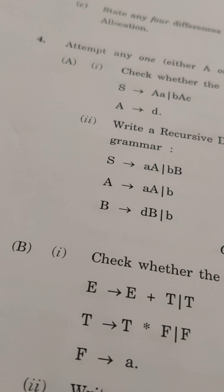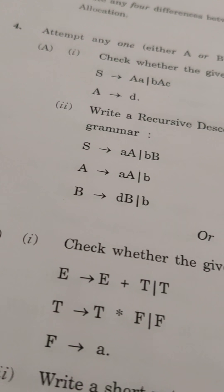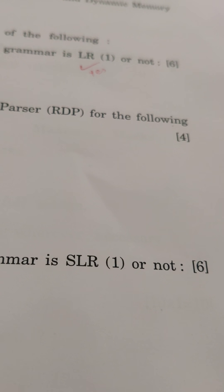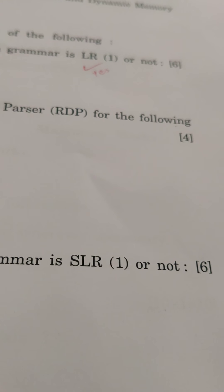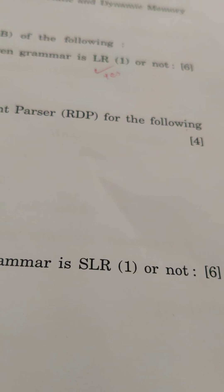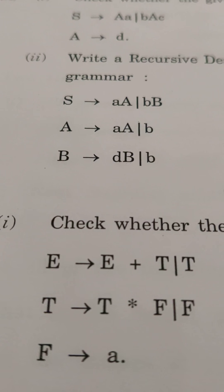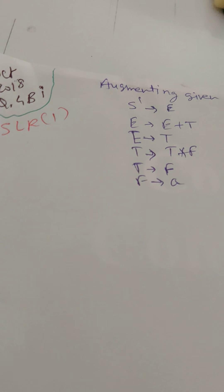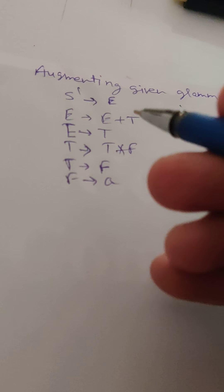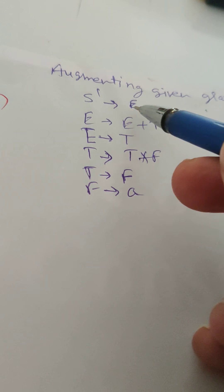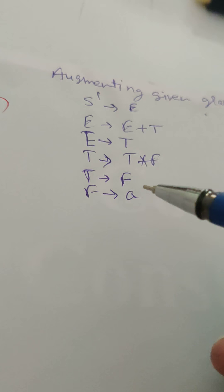In this video we'll be discussing whether a given grammar is SLR(1) or not. This problem is from the October 2018 paper, question 4B1, worth six marks. For SLR (Simple LR) parsing, the first step is to augment the given grammar. In augmenting the grammar, we add a starting rule S' → E and keep the remaining rules of E, T, and F as they are.